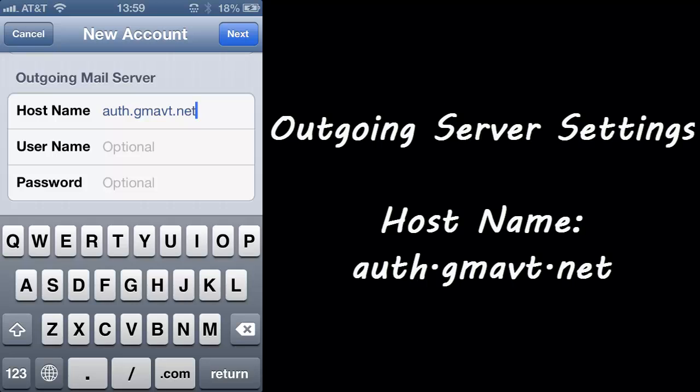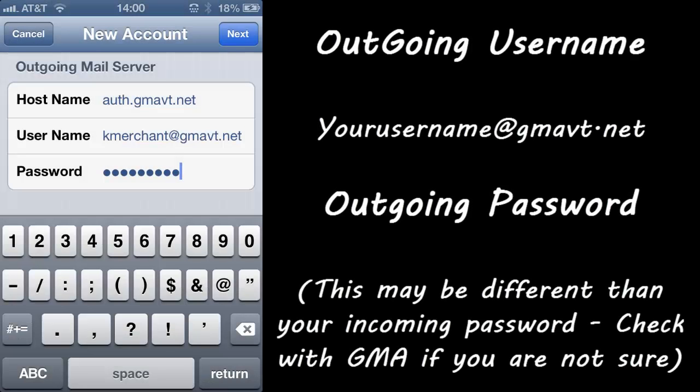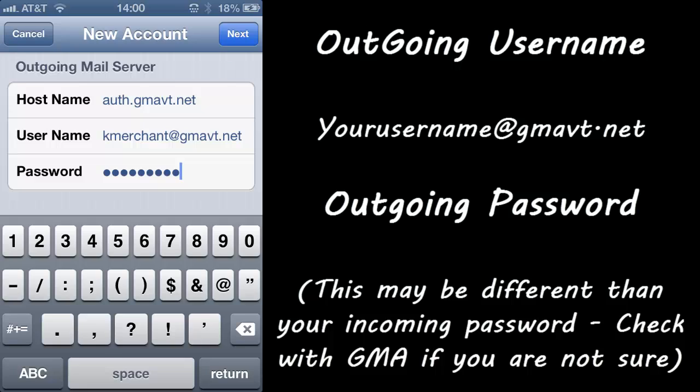The outgoing server settings are important as well. The host name has to be auth.gmavt.net. The outgoing username is your username at gmavt.net, and the outgoing password could be different than your incoming password. You're going to have to check with GMA on that if you're not sure.